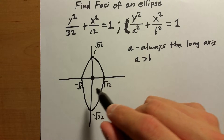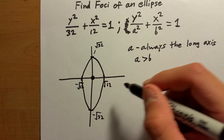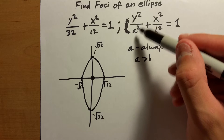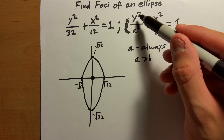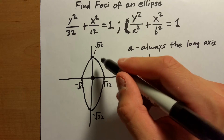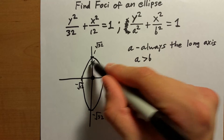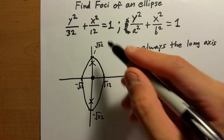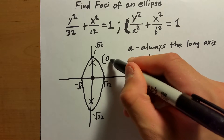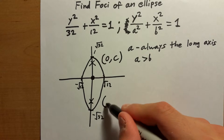Once we've done that, we can figure out what the foci points are. Since the foci is on the y-axis — because it's the major axis — we know the foci is going to be here and here. Essentially it's on the point (0, c), because c is the foci.